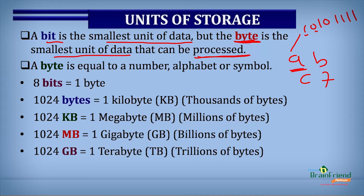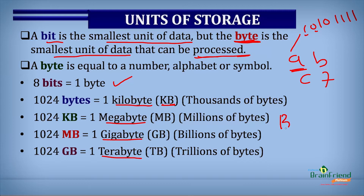Eight bits will give you one byte. There are higher categories of bytes — for instance, we have terms like kilobytes, megabytes, gigabytes, terabytes, and so on. Kilobytes are represented as KB. The capital letter B is used to represent bytes.